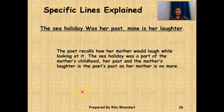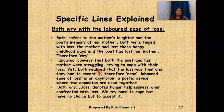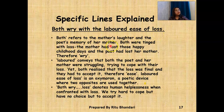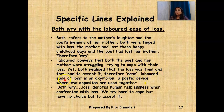Now let's look at the next page. 'The sea holiday was her past, mine was her laughter.' The poet recalls how her mother would laugh while looking at the photograph. The sea holiday was a part of her mother's childhood — her past — and the mother's laughter was the poet's past as her mother was no more. The other line usually asked in the exam is 'both wry with the labored ease of loss.' Both here refers to the mother's laughter and the poet's memory of her mother. Both were tinged with loss — the mother had lost those happy childhood days and the poet had lost her mother, therefore wry. Labored conveys that both the poet and the mother were struggling to cope with their loss, yet both realized that loss was final and had to accept it, therefore ease. Labored ease of loss is an oxymoron.